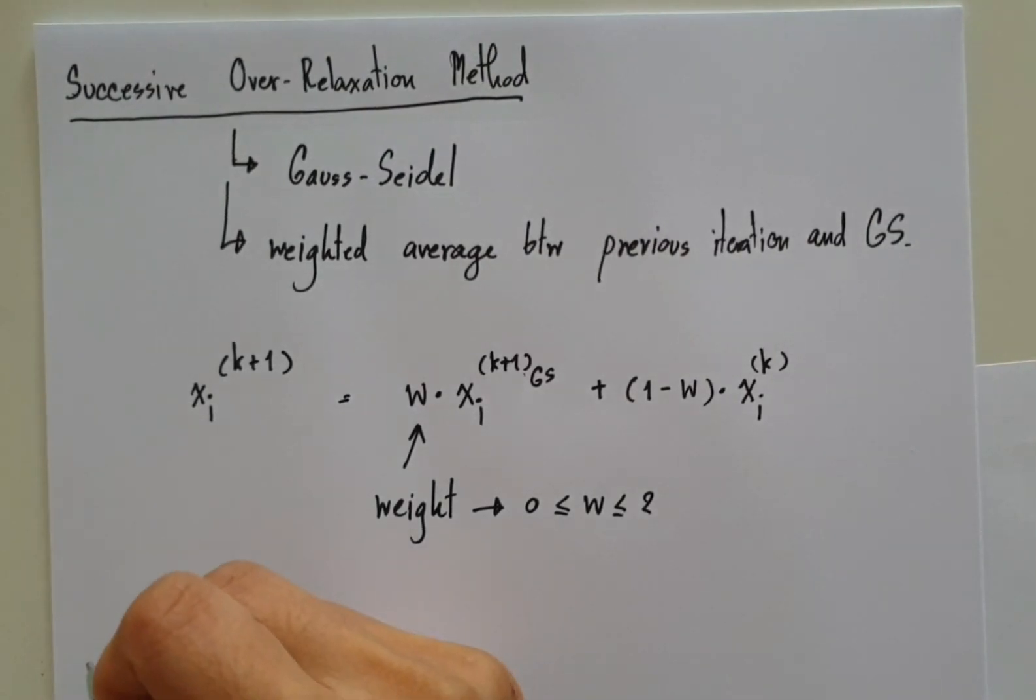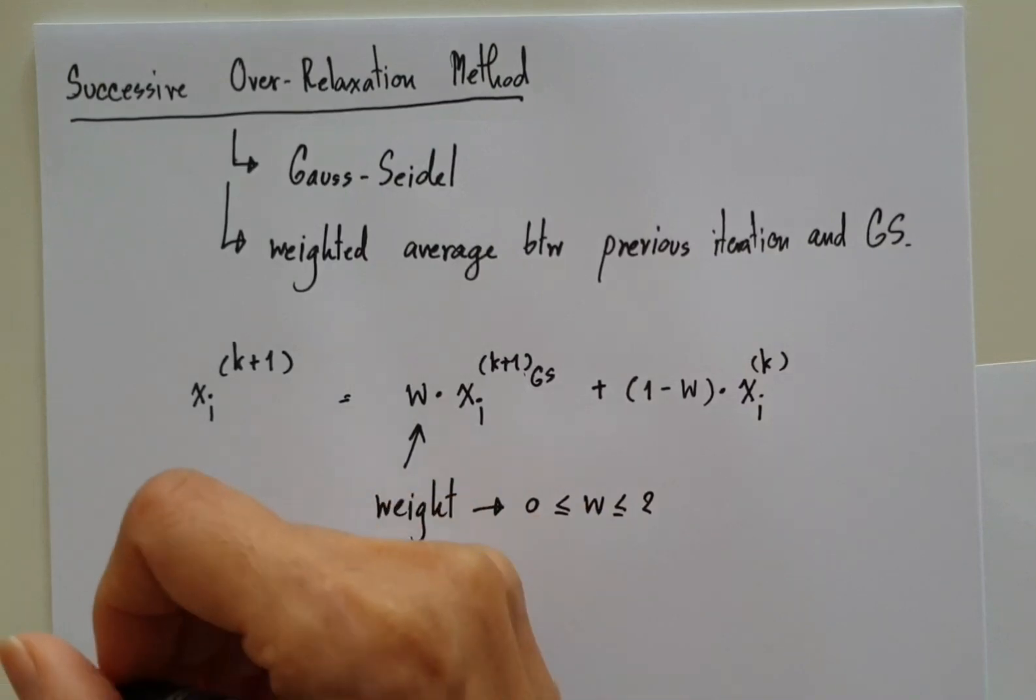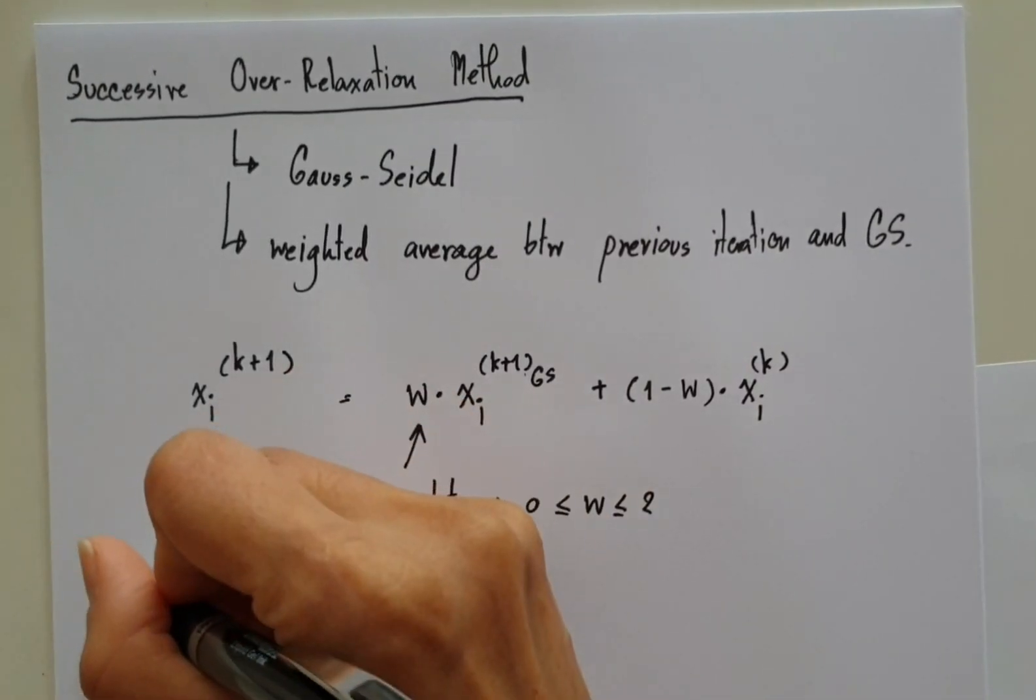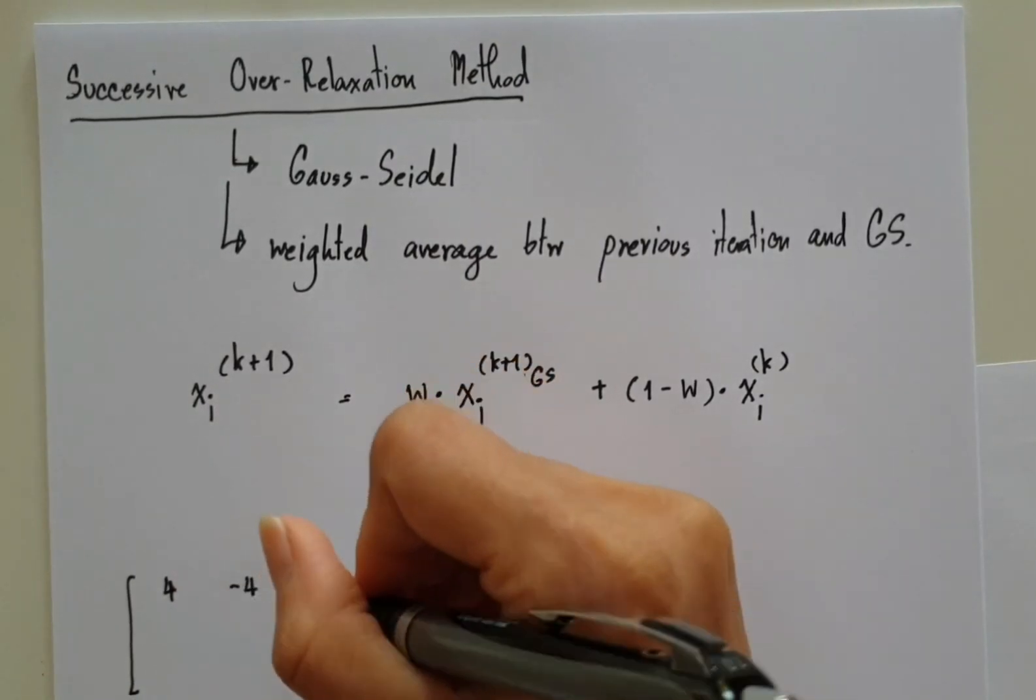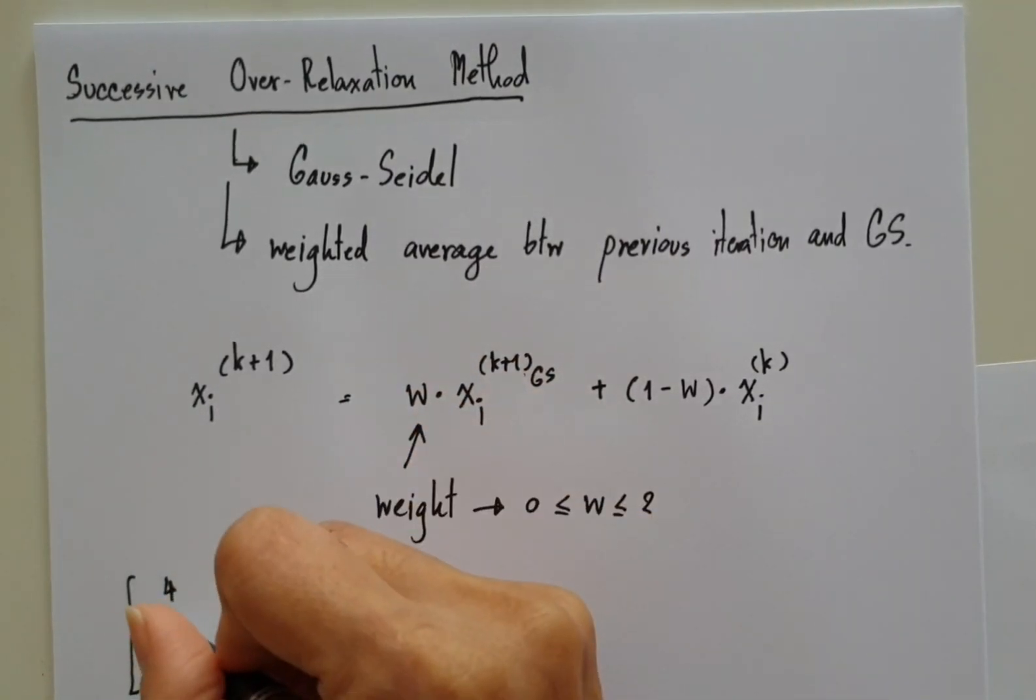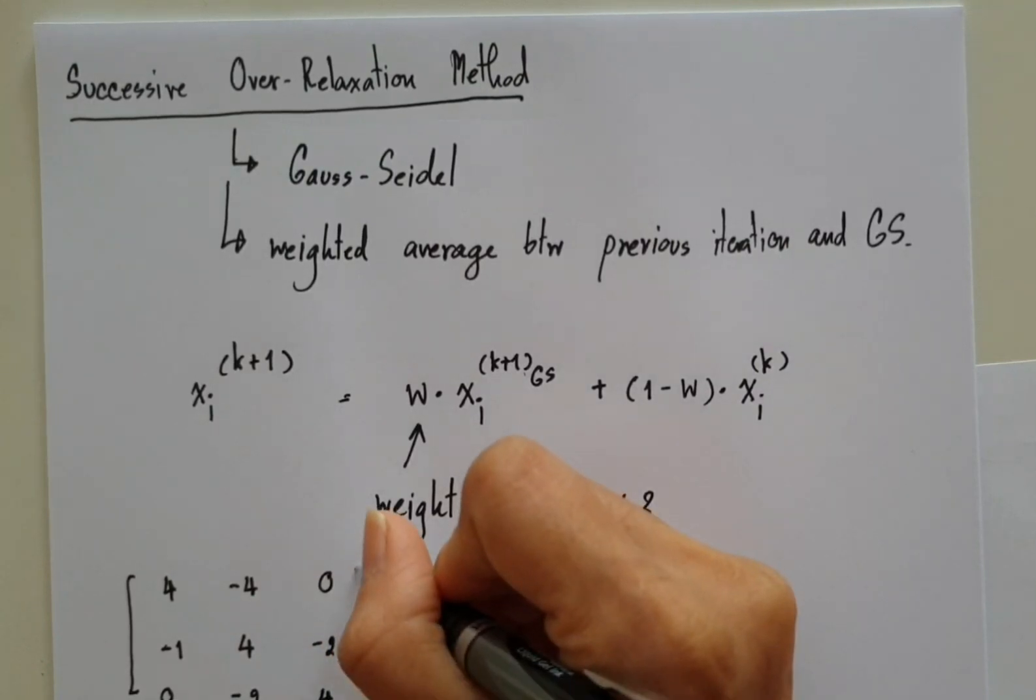And to show you how we compute the successive over-relaxation method, we will use this example: the matrix with elements 4, minus 4, 0, minus 1, 4, minus 2, 0, minus 2, and 4.